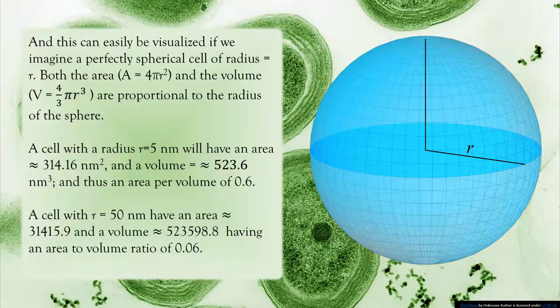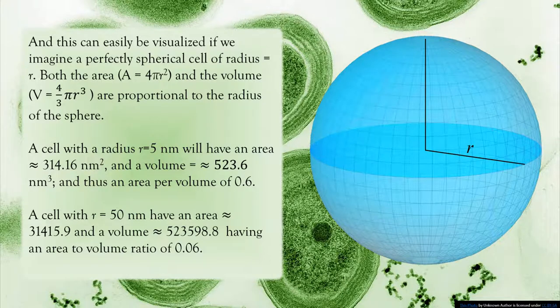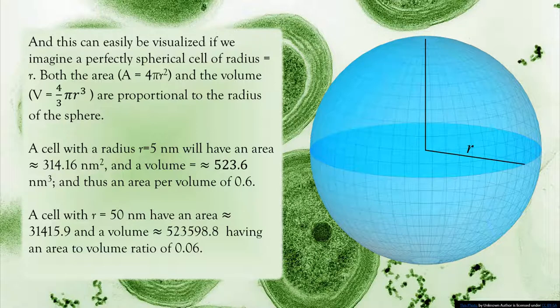A cell with r=50 nm will have an area of approximately 31,415 nm² and a volume of approximately 523,598 nm³, having an area to volume ratio of approximately 0.06.